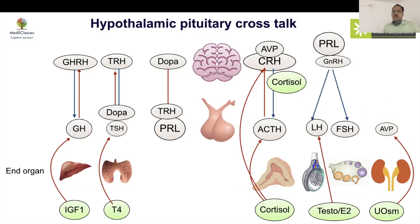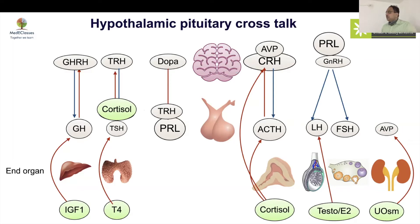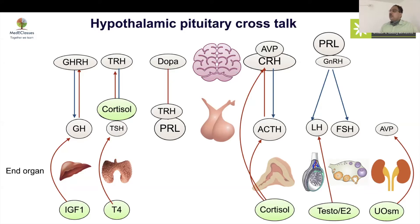Cortisol also suppresses TSH, so cortisol deficiency may cause TSH to rise to around 10–15 with a normal FT4. This can be mistaken for subclinical hypothyroidism, but it actually represents loss of cortisol's inhibitory effect on TSH. In cortisol deficiency, a mildly elevated TSH does not represent true subclinical hypothyroidism — wait and watch after hydrocortisone replacement.